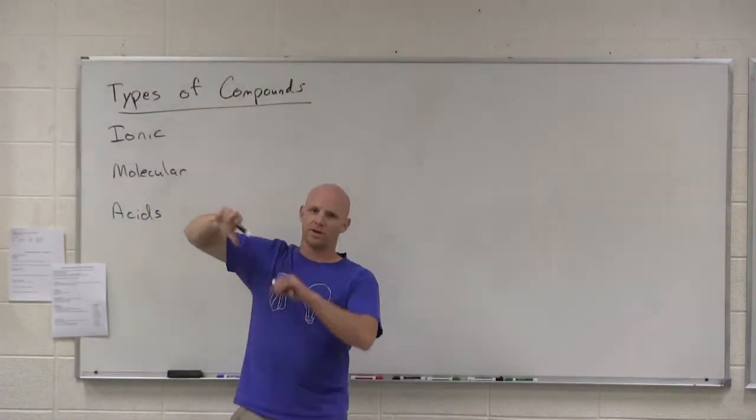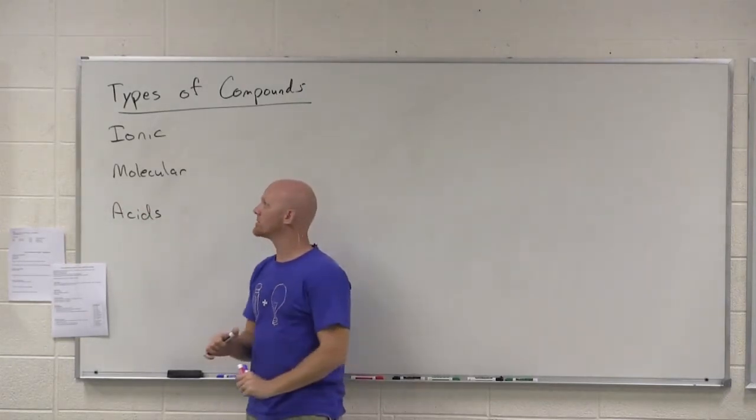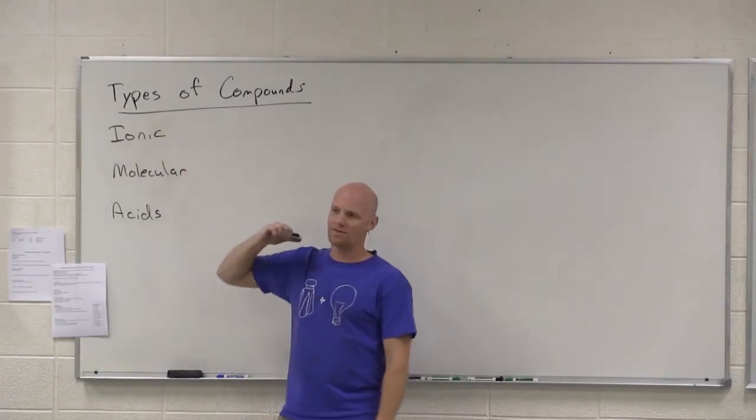So ionic compounds are composed of both positive ions and negative ions, cations and anions, which we'll definitely speak of much more later. How do we recognize if we have an ionic compound?